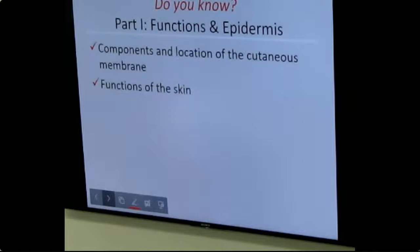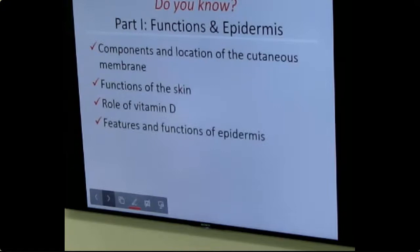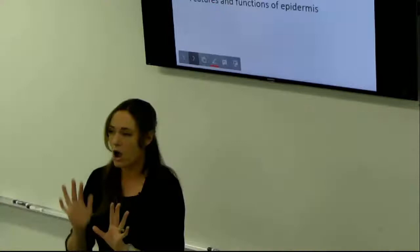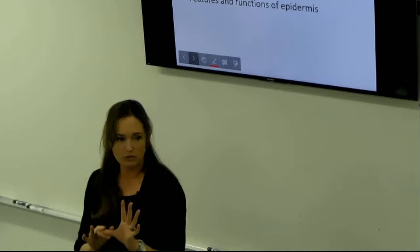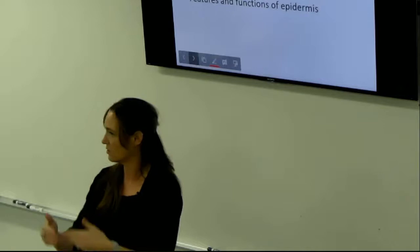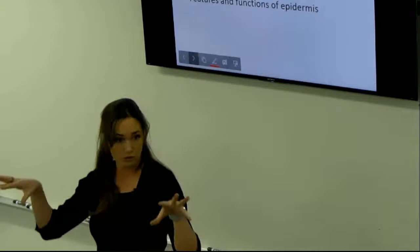Key things to know for the test: functions of skin — UV protection, abrasion resistance, immunity, and conversion to vitamin D3. Vitamin D ultimately helps absorb calcium from the gut. For the epidermis, know all five layers: stratum basale, stratum spinosum, stratum granulosum, stratum lucidum, and stratum corneum — and what's happening at each layer. Stratum basale is where melanocytes reside and keratinocytes are born.